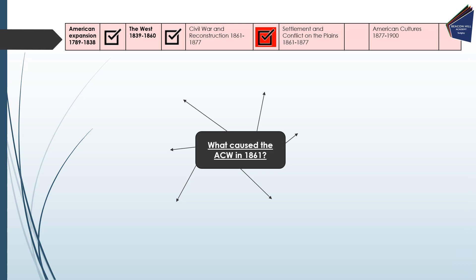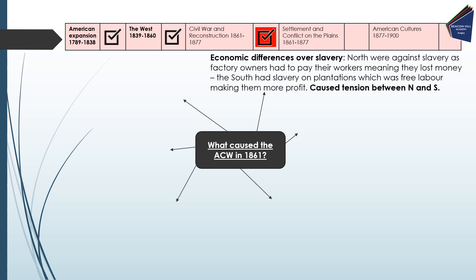The main theme you could be asked about for this third section — Civil War and Reconstruction 1861 to 1877 — is what caused the American Civil War in 1861. There are lots of long-term factors and catalysts. First of all, there were economic differences over slavery. The main tension is that factory owners in the North had to pay their workers and lose some profit on wages, whereas the South had slavery on plantations — free labour — meaning they retained more profit. This caused tension between North and South.